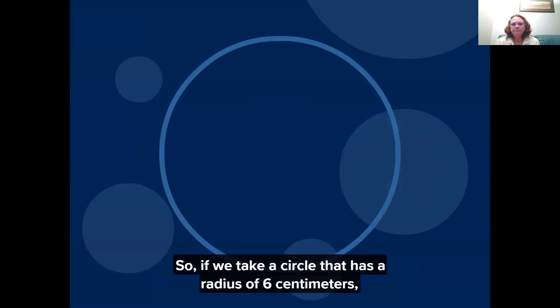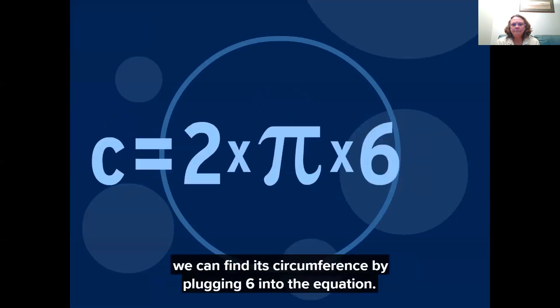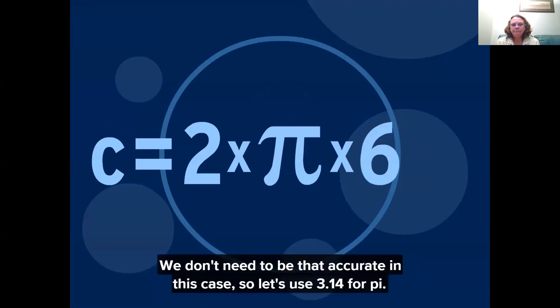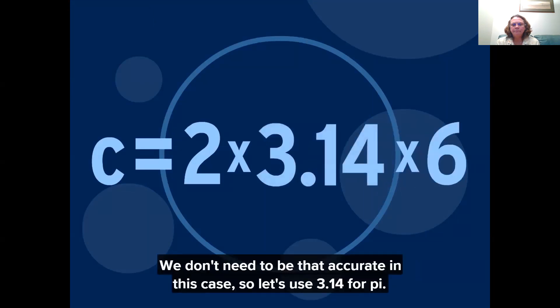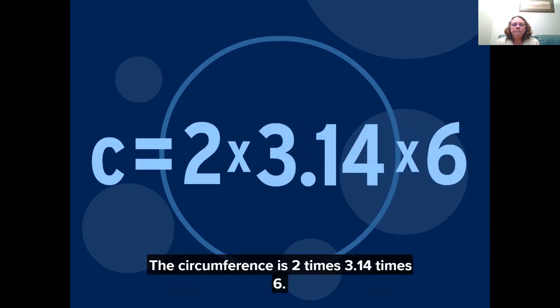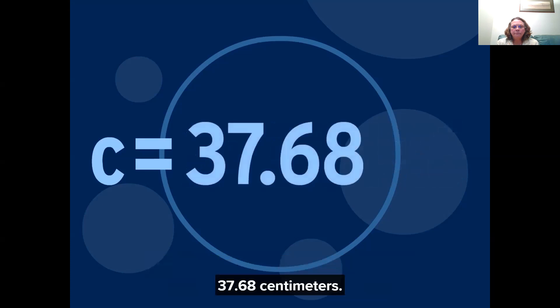In your math textbook the equation for a circle's circumference usually reads c equals 2 pi r where r is the radius of the circle. The radius is half of the diameter. So if we take a circle that has a radius of 6 centimeters we can find its circumference by plugging 6 into the equation. We don't need to be that accurate in this case so let's use 3.14 for Pi. The circumference is 2 times 3.14 times 6. 37.68 centimeters.